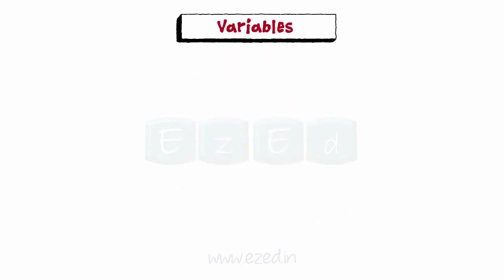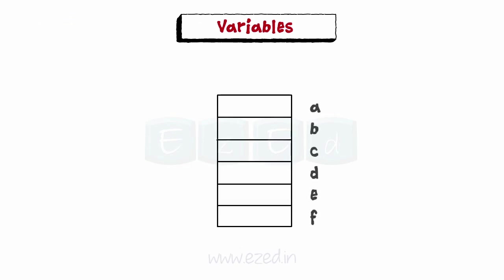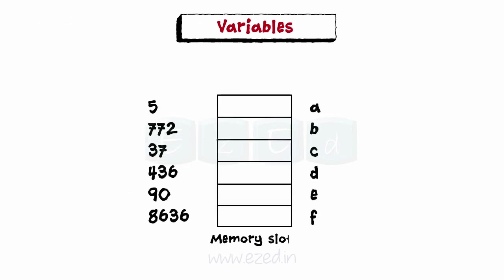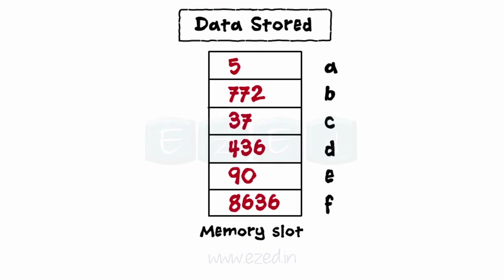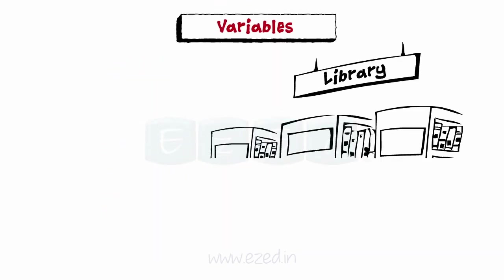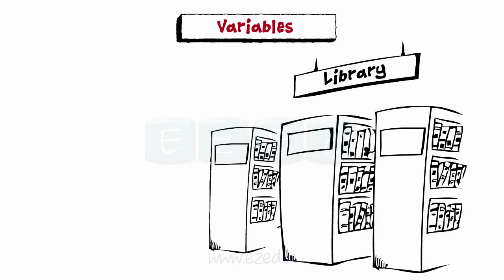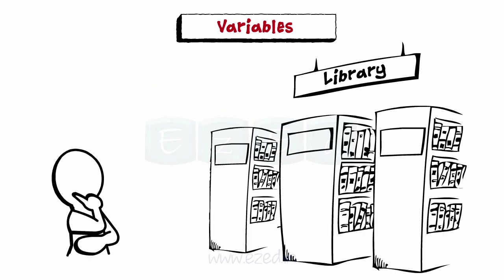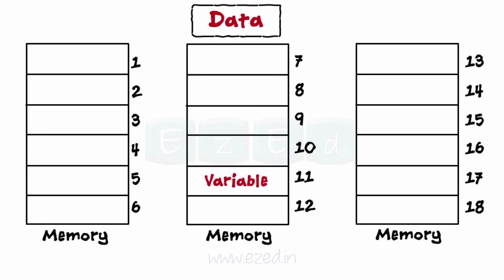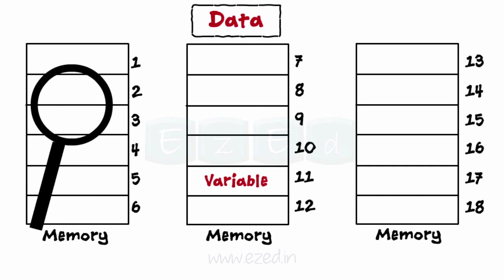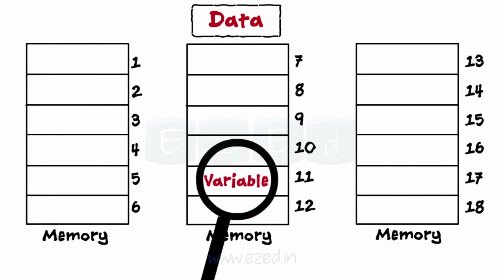Before learning the types of data types, let us learn what a variable is, along with variable declaration and initialization. A variable is an identifier of the memory location where data is stored and can be retrieved. Imagine a library with books of different categories in different shelves — if the librarian has to locate a C programming book, it would be difficult. Similarly, if we had to store some data in computer memory and need to retrieve it, it would be difficult to locate it without a proper location identifier, which is provided by the variable.